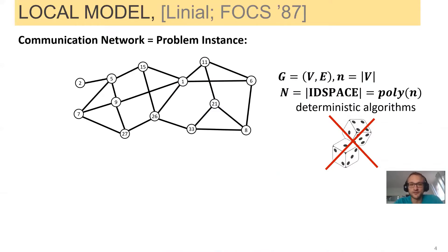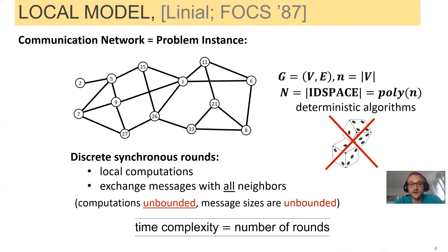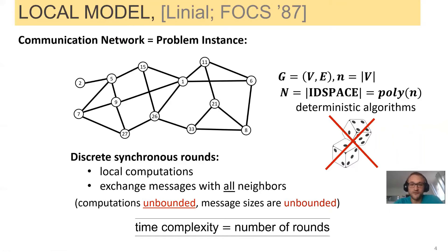Let's make this more concrete and look at the model we use. This is the standard LOCAL model introduced by Linial in 1987. We have a communication network abstracted as a graph, and each node has a unique ID from some ID space which is polynomial in the number of nodes. These vertices communicate in discrete synchronous rounds. In one round, a vertex can perform some local computation and exchange messages with all of its neighbors. Messages and local computations are not bounded, and we do not charge for local computations. The only complexity measure is the number of synchronous rounds until we've solved some problem.